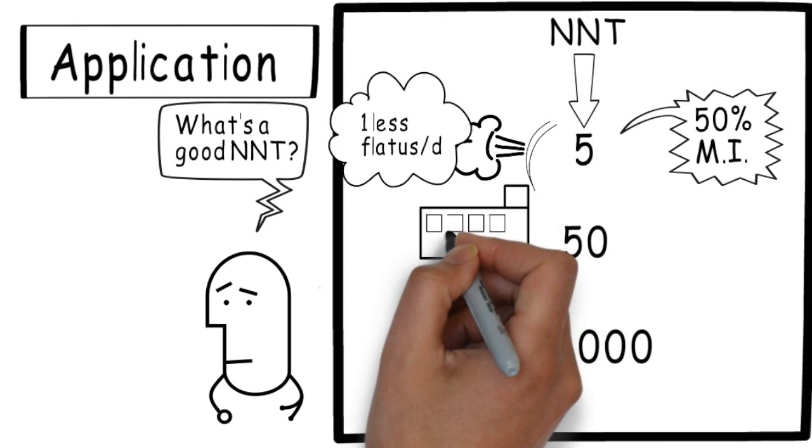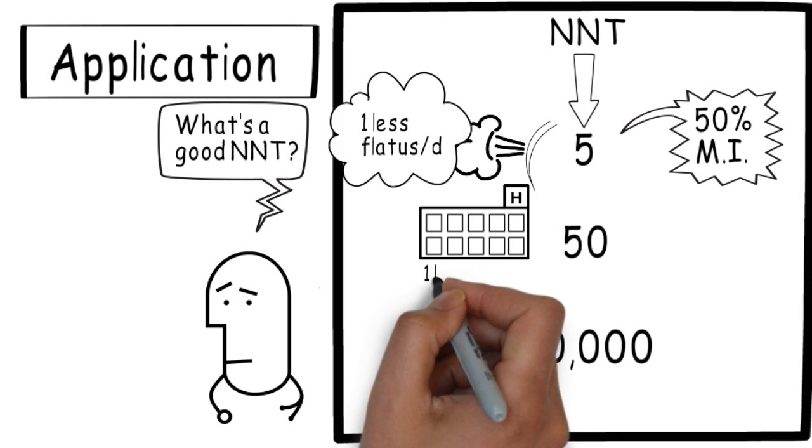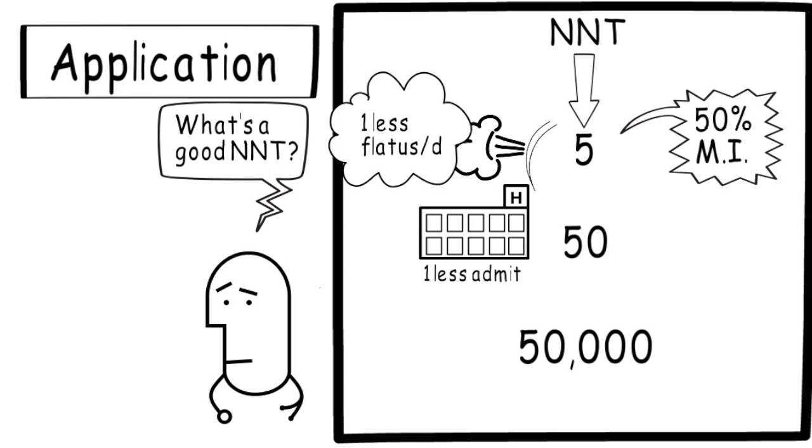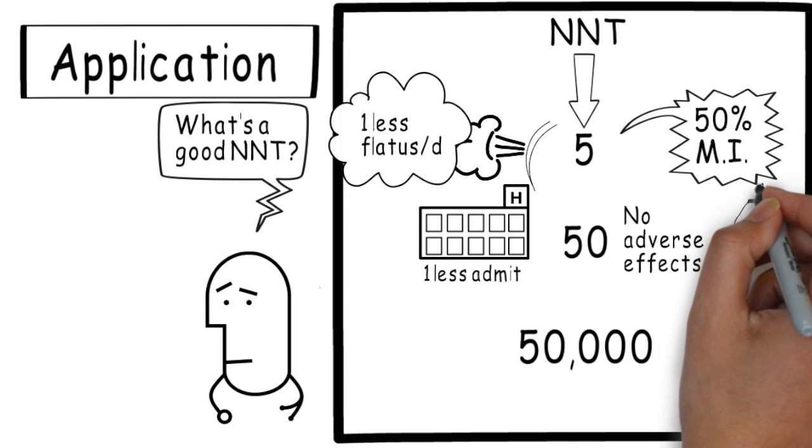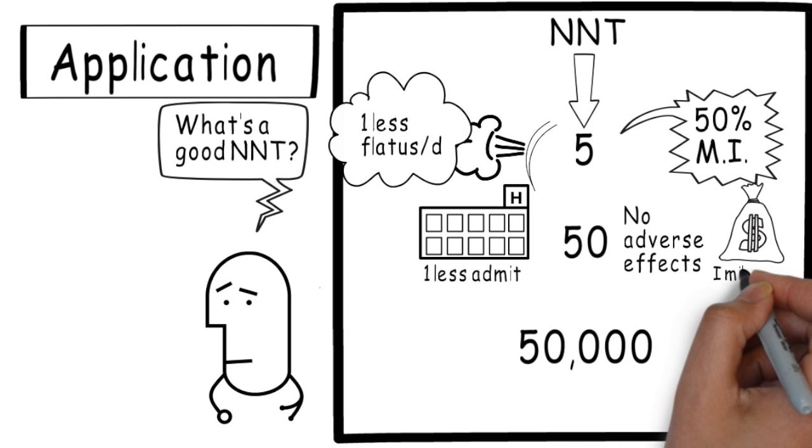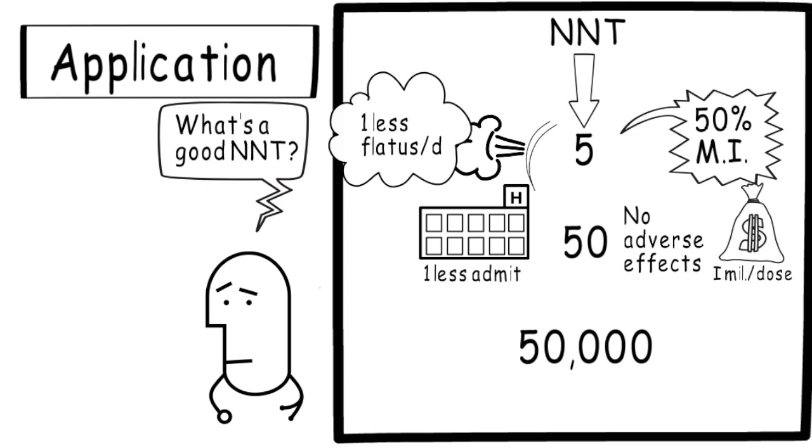In our second fictitious study, the NNT is 50. The benefit is one less admission. For every 50 patients treated, one patient does not have to be admitted to hospital. There are no adverse effects with this treatment, but when you dig a little deeper, you find out that this new therapy costs $1 million per dose. Meaning, even at one dose per patient, you'd have to spend $50 million to prevent one admission. Doesn't sound like good value for the money.